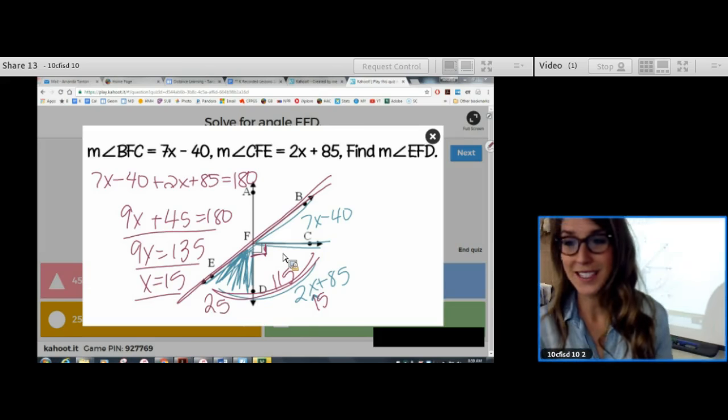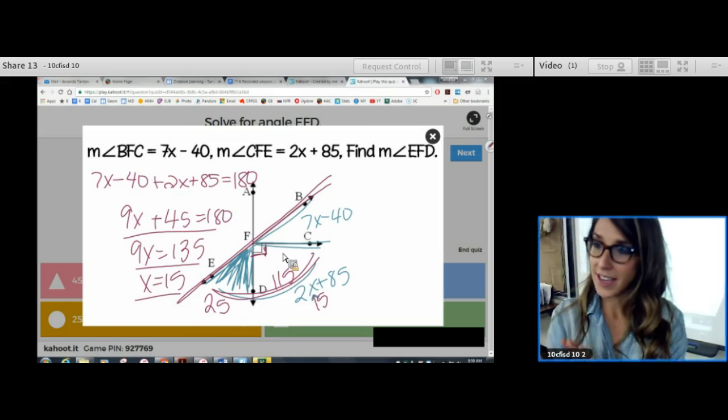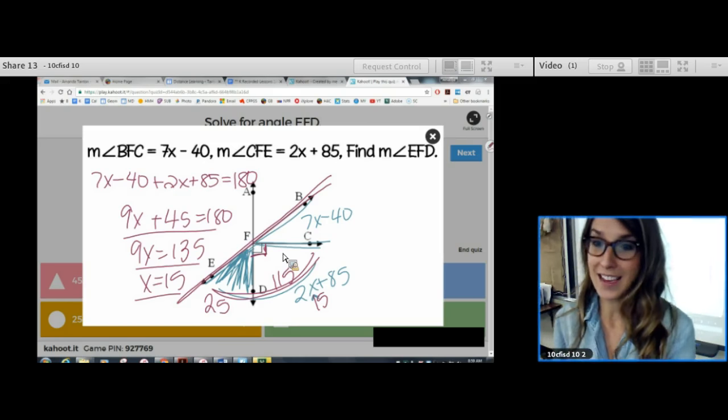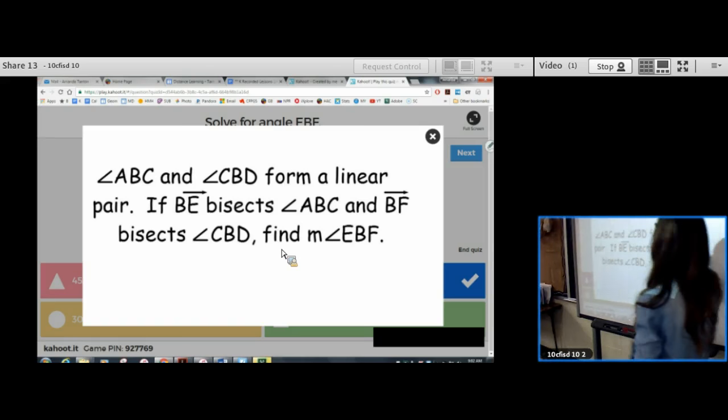So, that was multi-step. You had to add them to equal 180. Then, you had to solve for x. Then, you had to plug it in. Then, you had to subtract 90. This was definitely a K-level problem. It's a little bit deeper thinking. ABC and CBD form a linear pair.